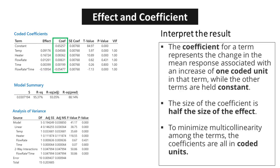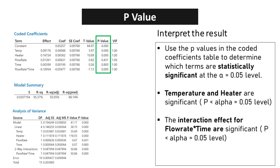The coefficient for a term represents the change in the mean response associated with an increase of one coded unit in that term, while the other terms are held constant. The size of the coefficient is half the size of the effect. To minimize multicollinearity among the terms, the coefficients are all presented in coded units. Use the p-values in the coded coefficients table to determine which terms are statistically significant at the alpha = 0.05 level.